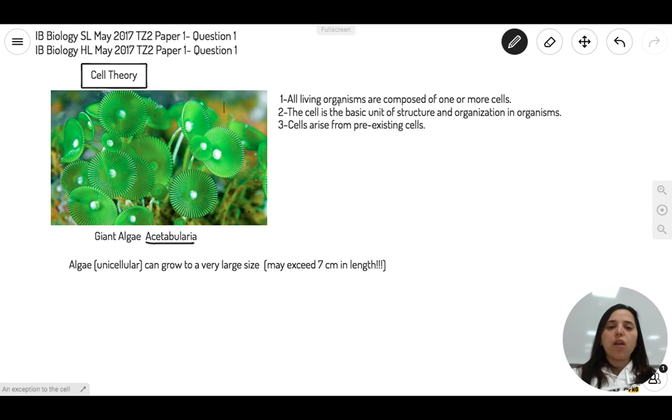Now, there are three principles to it. The first one is that all living organisms are composed of one or more cells. The second one is that the cell is the basic unit of structure and organization in organisms. And the last one is that cells arise from pre-existing cells.